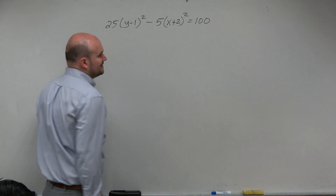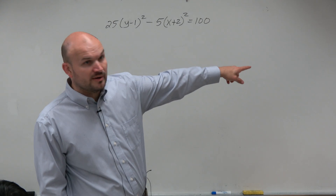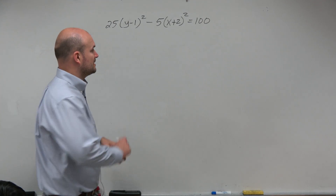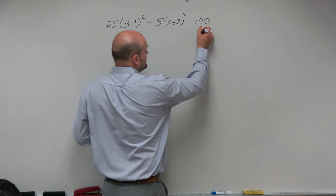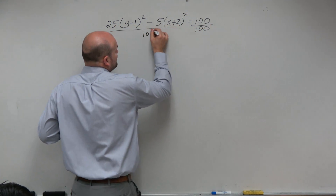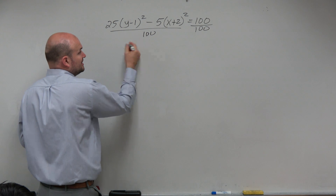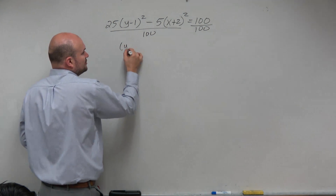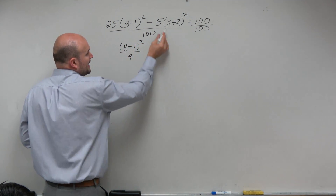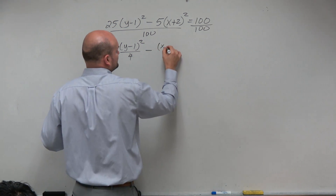The main thing looking at this is that this is not in our standard form. We want to make sure it's set equal to 1. So the first step is to divide by 100 on both sides. By dividing by 100, 25 over 100 simplifies to 1/4, and 5 over 100 can be simplified to 1/25th.